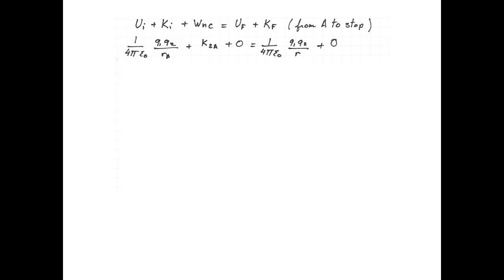The final potential energy is the final potential energy of the pair q1 and q2 when they're a distance R apart. And of course, if q2 has stopped, that means that the final kinetic energy is zero.